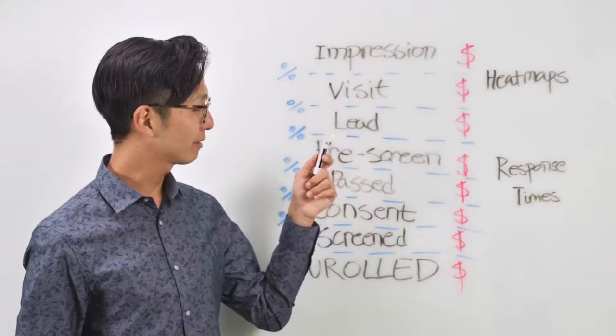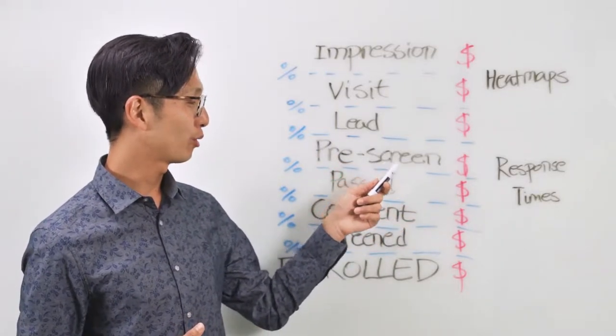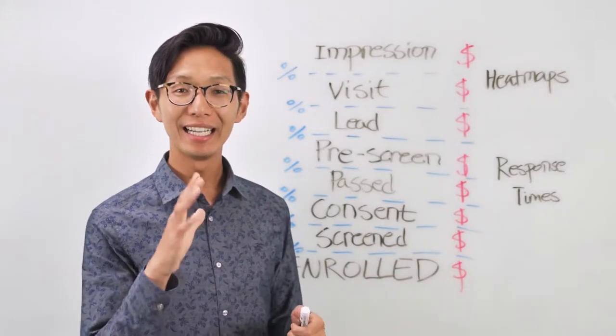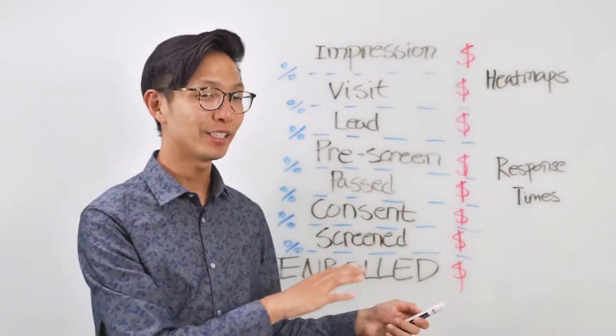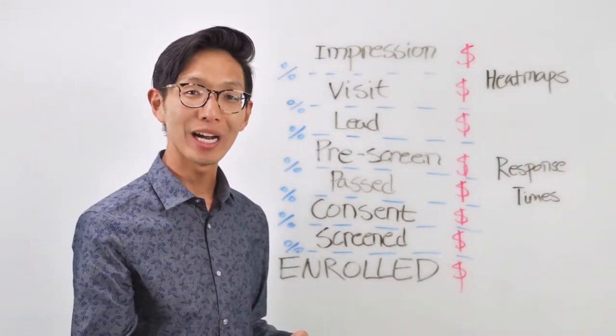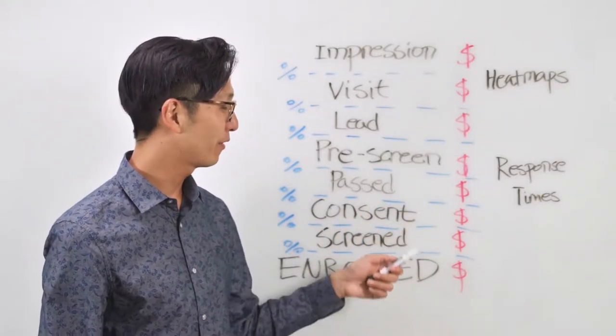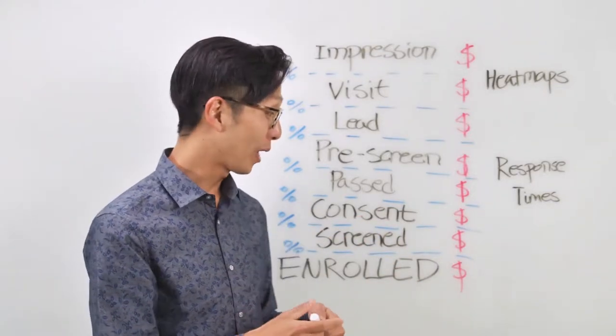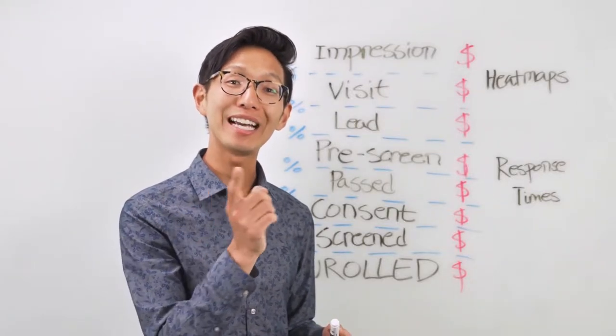And from there, it cascades down to passing your prescreener to consenting, screening, and enrolling. Again, this is about where the water starts to get murky across the industry. It's because every clinical trial is so different. Make sure that you're accounting for every step. If there are three screening appointments that a patient needs to go to, write out screener one, screener two, screener three, and track those on a day-to-day basis.